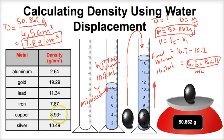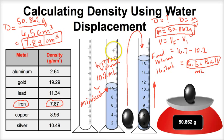We can look at the density table now — since we have a density of 7.8 grams per cubic centimeter, which is very close to 7.87, this little ball is going to be iron. So we just learned how to calculate the density of an object using water displacement and from that were able to determine the unknown metal by comparing to a table of metal densities.